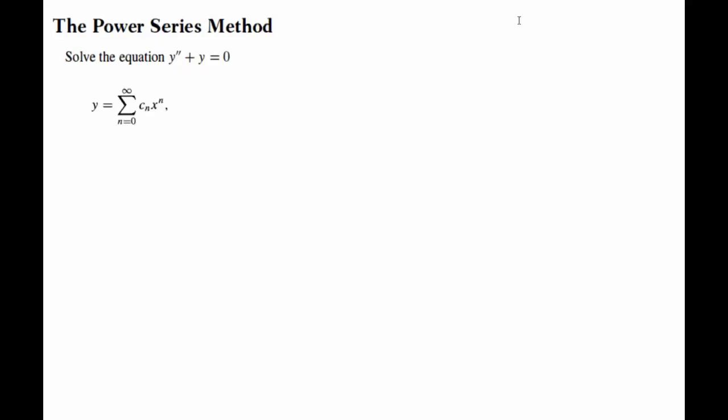The first thing is we need to substitute this solution y equals summation cn x^n into our differential equation. For that, we need the second derivative. So first derivative, as before, is just n cn x^(n-1). And that leads to the second derivative...